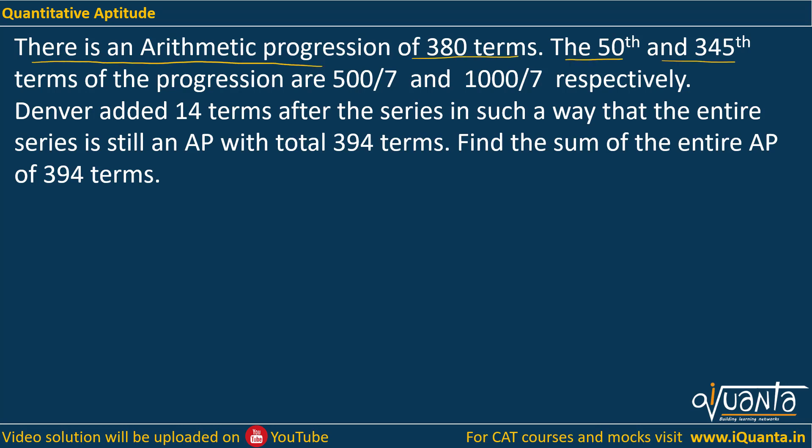The 50th and the 345th term of the progression are 500 by 7 and 1000 by 7 respectively. Denver added 14 terms after the series in such a way that the entire series is still an AP with total 394 terms. Find the sum of the entire AP of 394 terms.